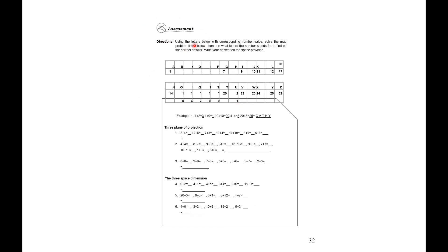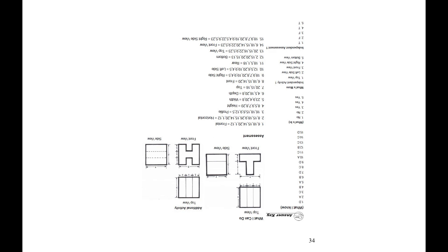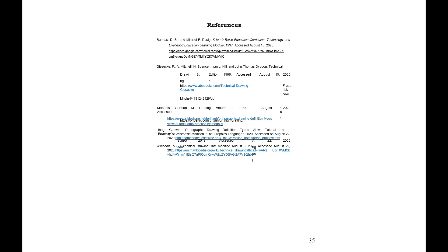For the assessment, skip this activity and proceed to the additional activity. For the additional activity, study the given isometric drawing below, then construct the orthographic drawing in a long bond paper with its front view, top view, and side view with the given measurements. That's all for Module 2 in Technical Drawing 7 — Orthographic Drawing. Thank you for listening!